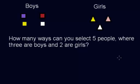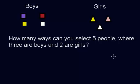Since we're in the permutation and combination series, we have to determine which one this is — is it a combination or is it a permutation? If you aren't sure which one it's going to be, give yourself an example.